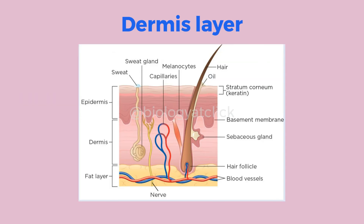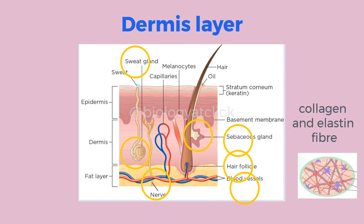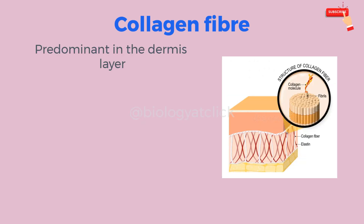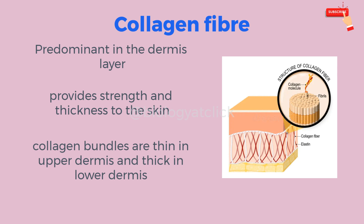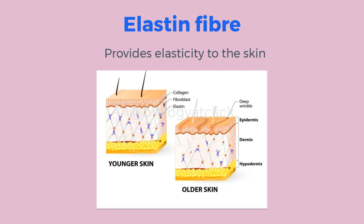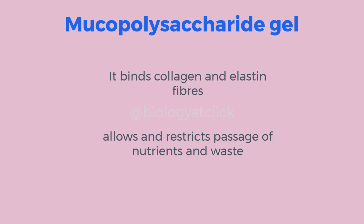Beneath the epidermis is the dermis layer. It is the fibrous connective tissue of the skin and contains blood vessels, lymph vessels, hair follicles, sweat glands, sebaceous glands, and nerve endings. The dermis is comprised of collagen and elastin fibers. Collagen fibers are predominant and have enormous tensile strength that provides skin with strength and thickness. Collagen bundles are small in the upper dermis and thick in the deeper part. Elastin fibers provide elasticity to the skin. Collagen and elastin fibers are bound together by mucopolysaccharide gel, through which nutrients and waste can diffuse into and from other tissue components.